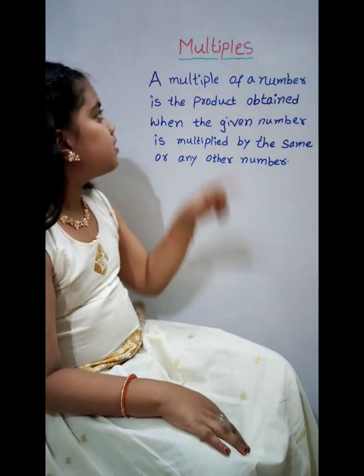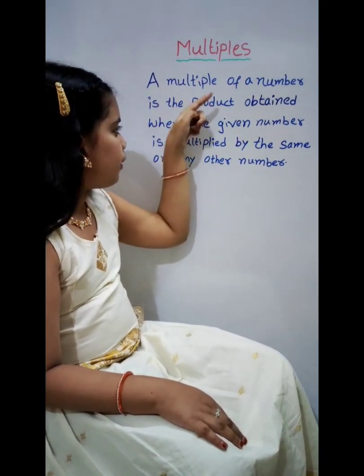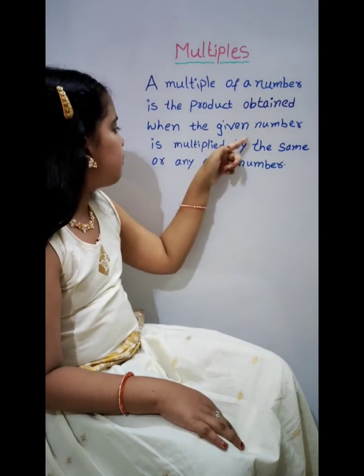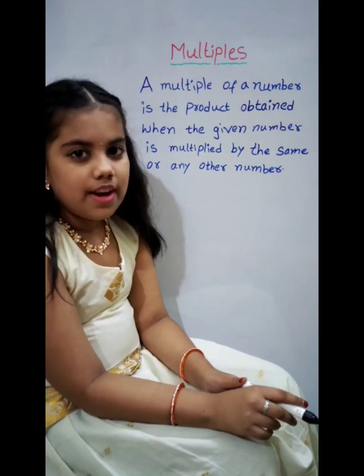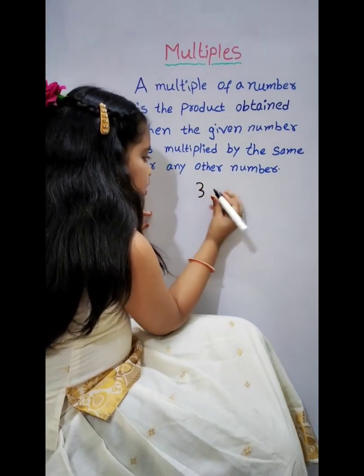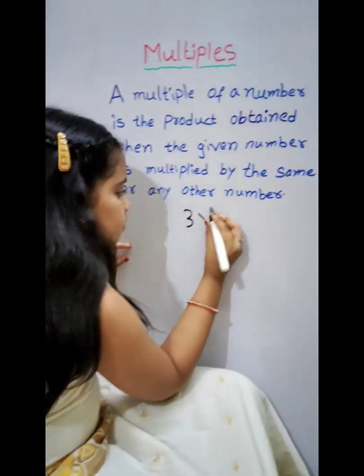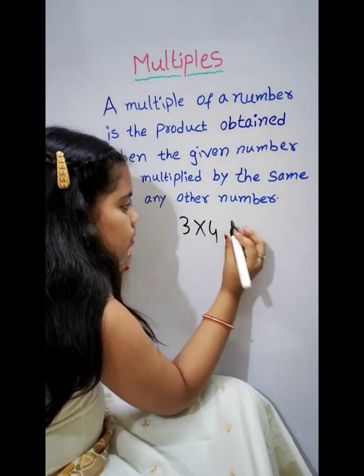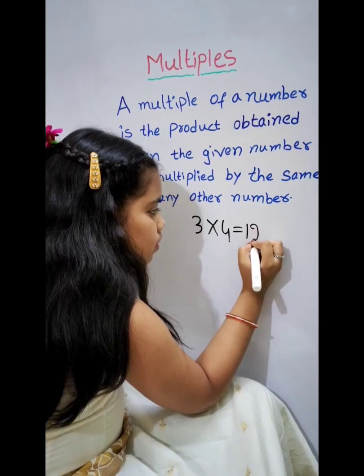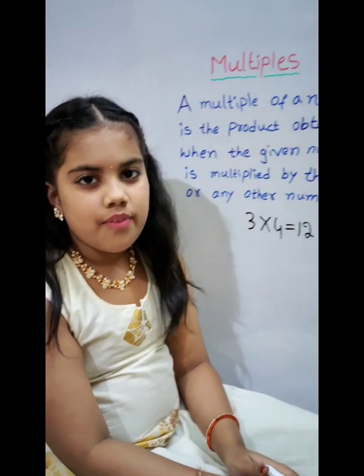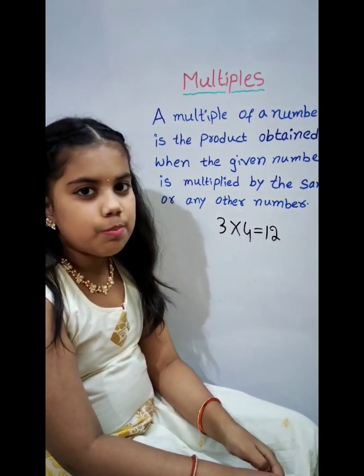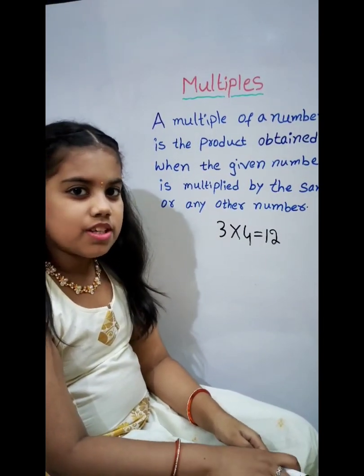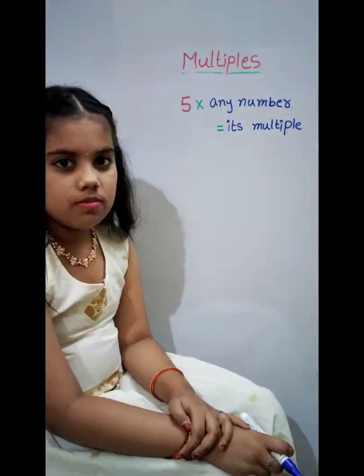First we learn about multiples. A multiple of a number is the product obtained when the given number is multiplied by the same or any other number. For example, 3 4's are 12. The factors of 12 are 3 and 4. 12 is a multiple of 3, and 12 is also a multiple of 4.